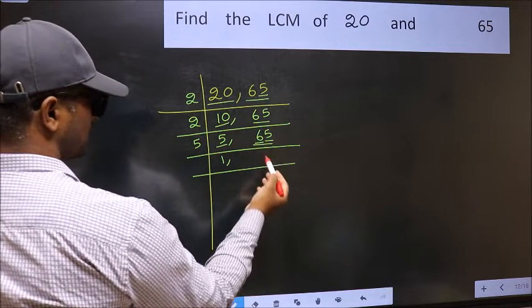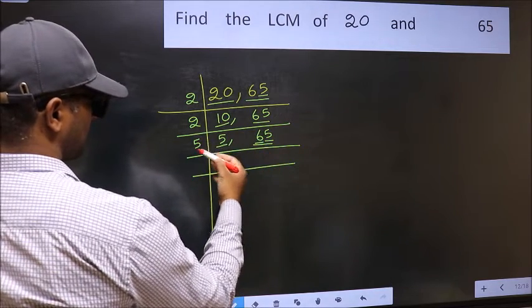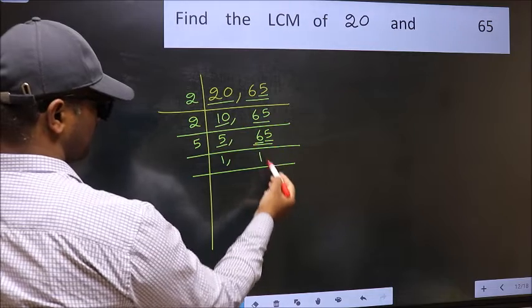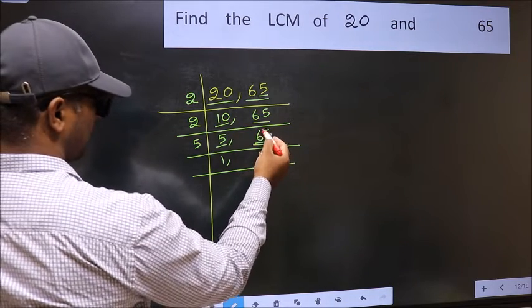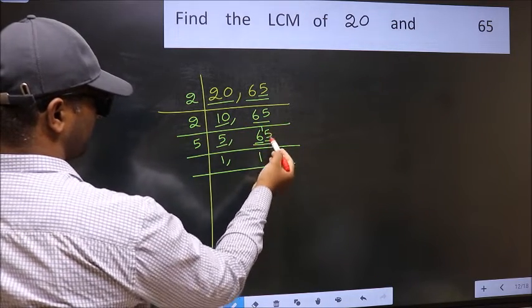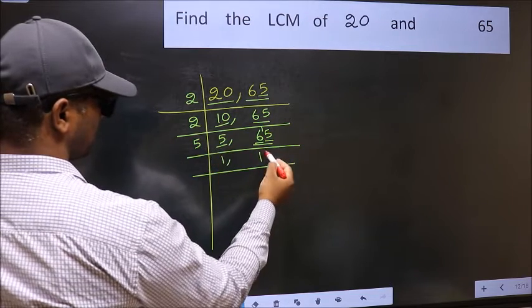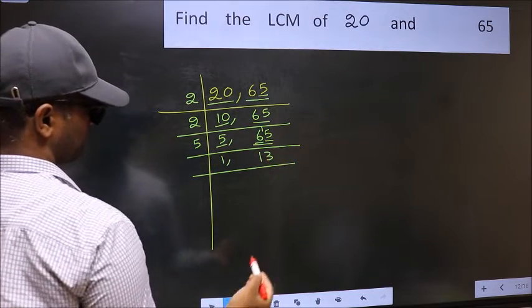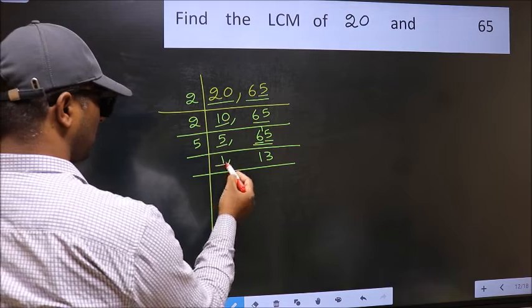First number 6. A number close to 6 in 5 table is 5 once 5. 6 minus 5 is 1. Carry forward 15. When do we get 15 in 5 table? 5 times 3 is 15.